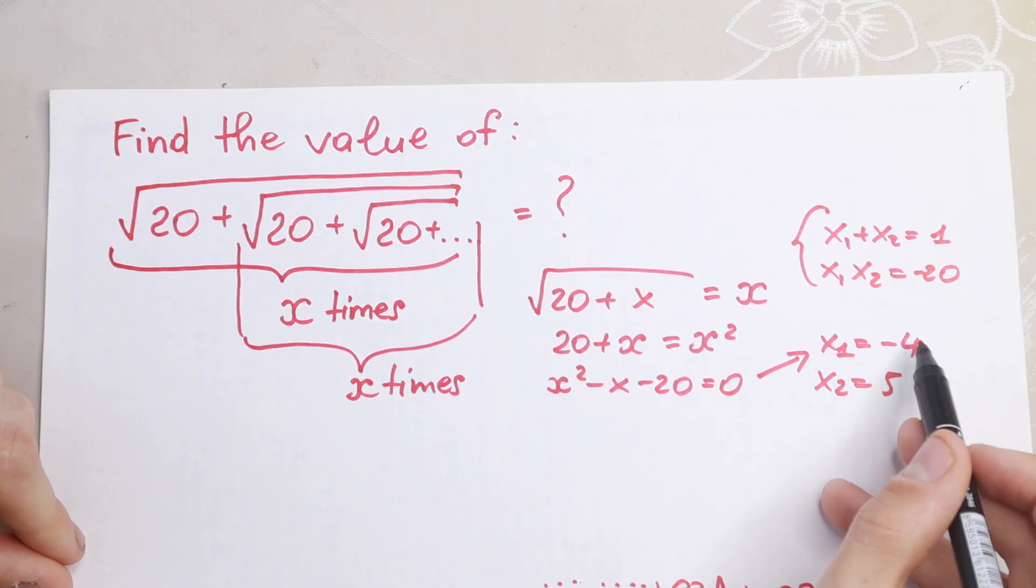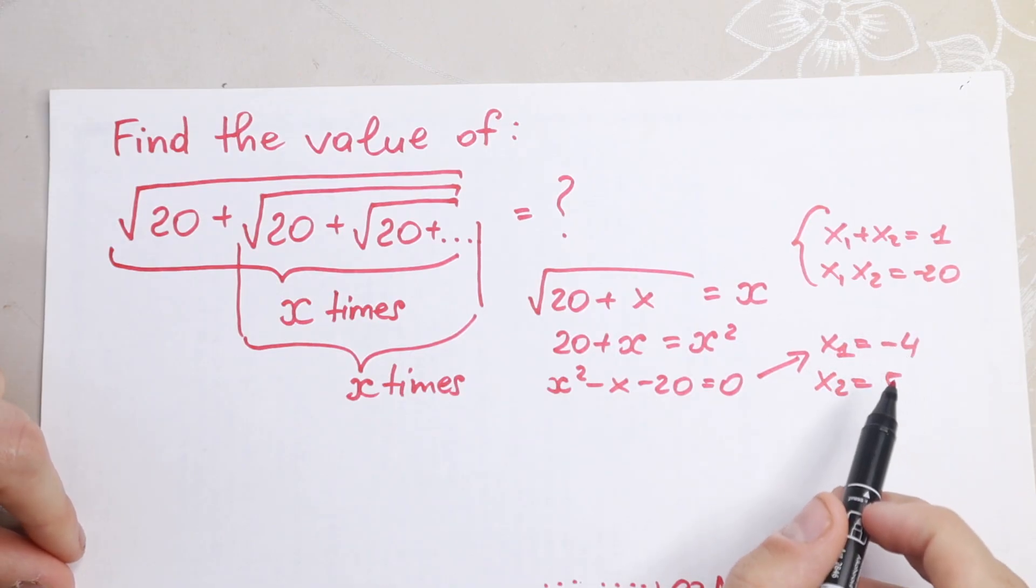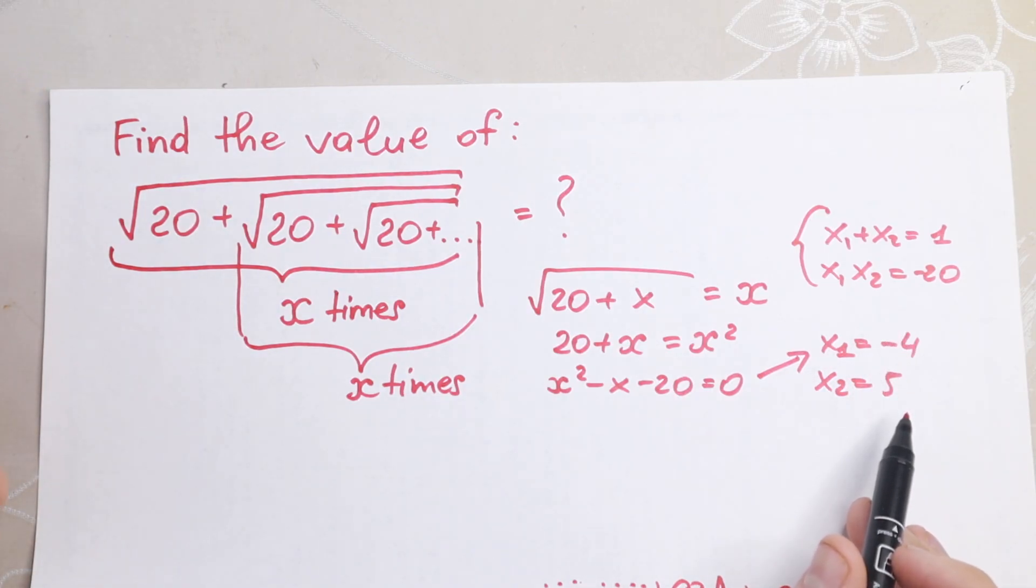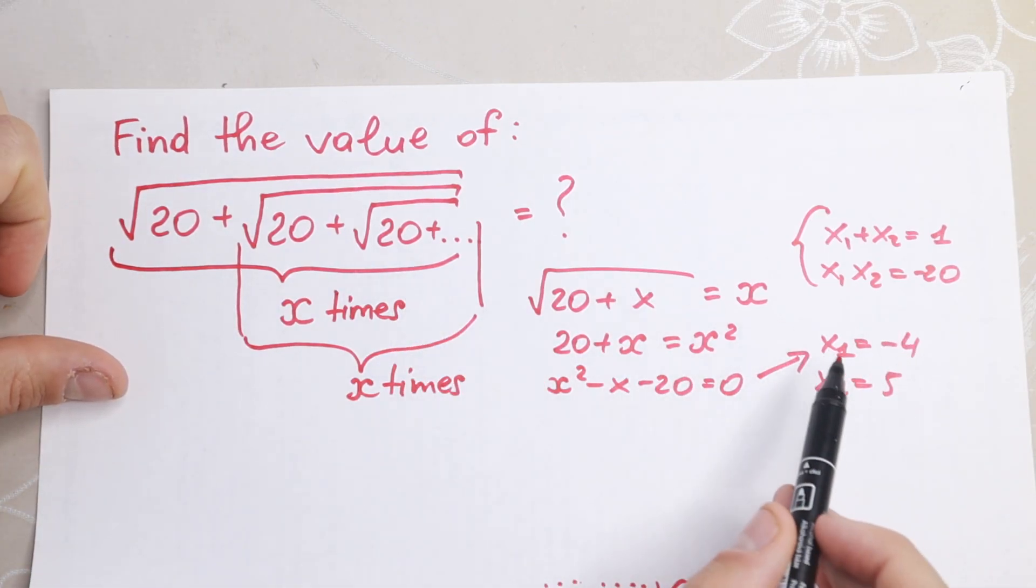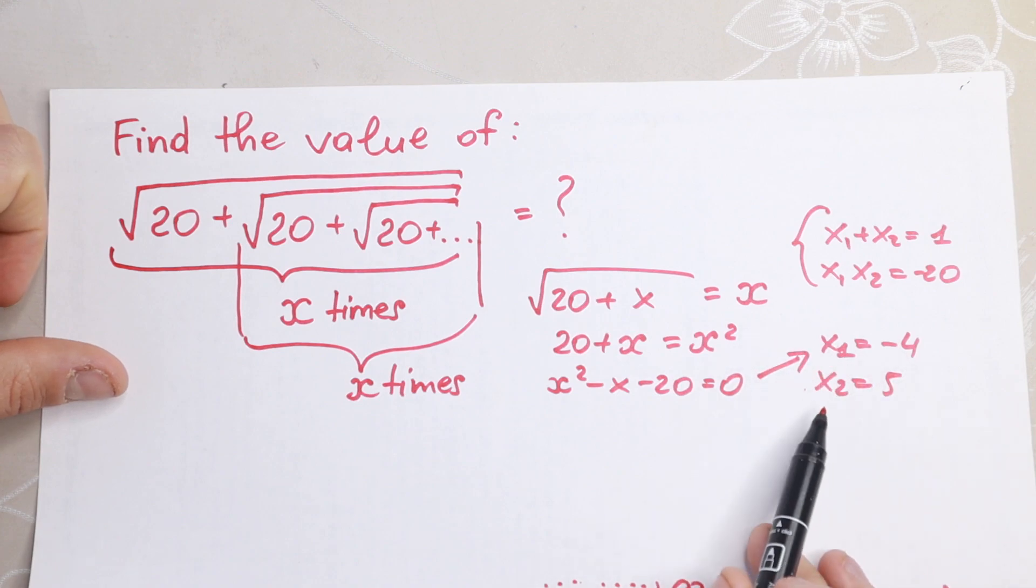So take a look, right here we have two answers, the first one and the second one. So this sum equal to minus four, or this sum equal to five, because we know that our sum can be equal to only one of these values.